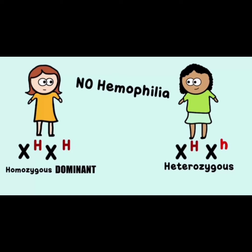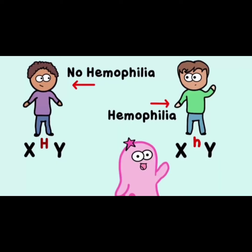X superscript H and X superscript H serve as the homozygous dominant. X superscript H and X superscript h indicates heterozygous. To determine if a child has hemophilia, we need to define the genes of their parents.